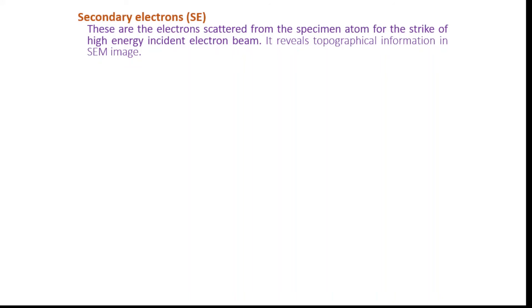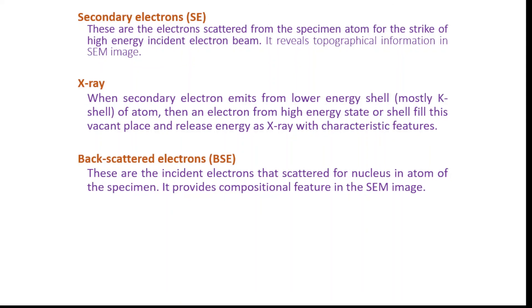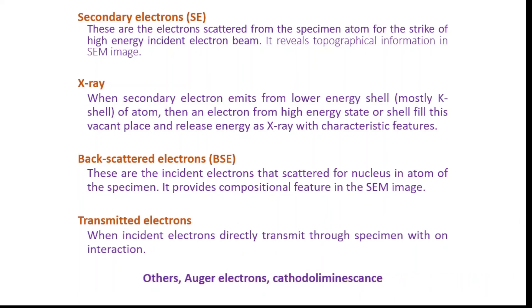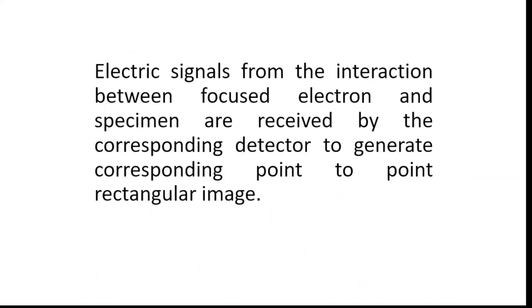Secondary electrons are generated by the strike of the high energy electron beam scattered from atoms of the sample. They reveal topographical information — meaning the surface morphology, surface roughness, or surface structure of the specimen. X-rays generated from this process allow analysis of the elemental composition of the sample. Backscattered electrons are high energy electrons repelled by the nucleus of the atom and provide compositional features in the SEM image. Other phenomena like Auger electrons and cathodoluminescence emissions also occur and provide additional information about the samples. The electric signals from these interactions are received by corresponding detectors, generating a corresponding point-to-point rectangular image.